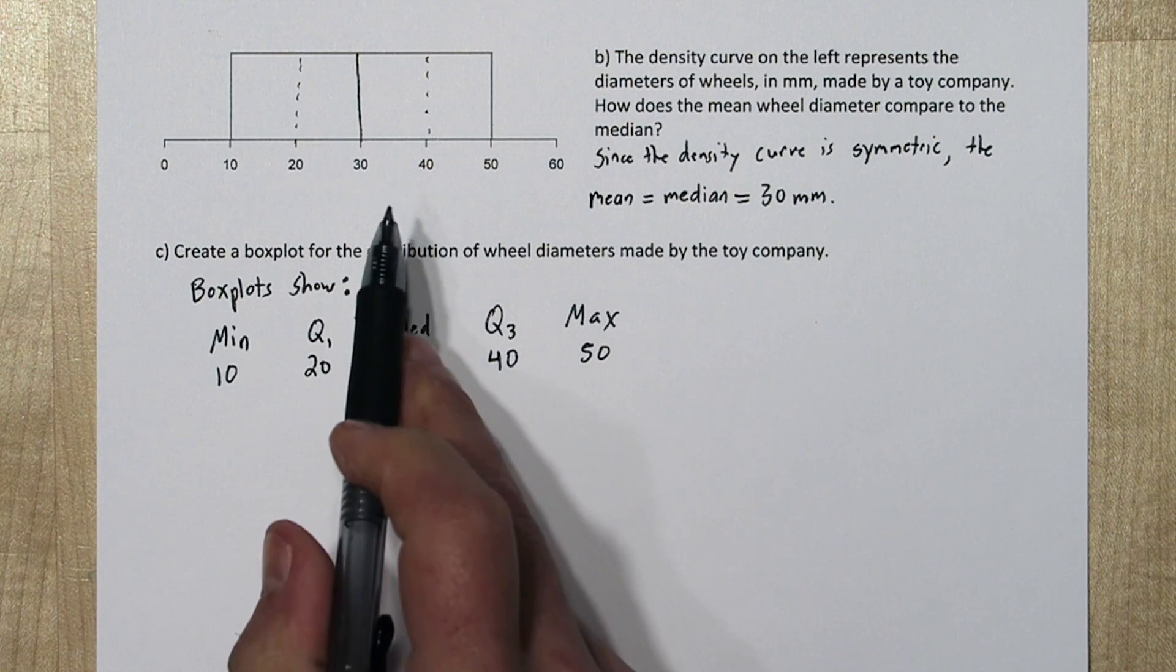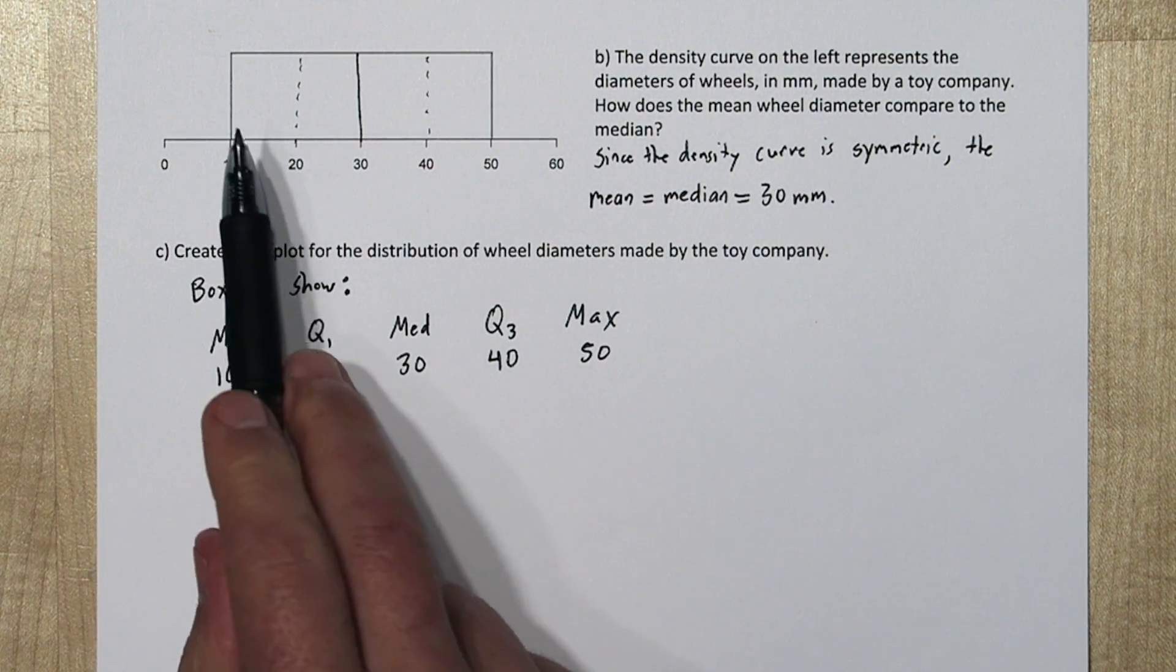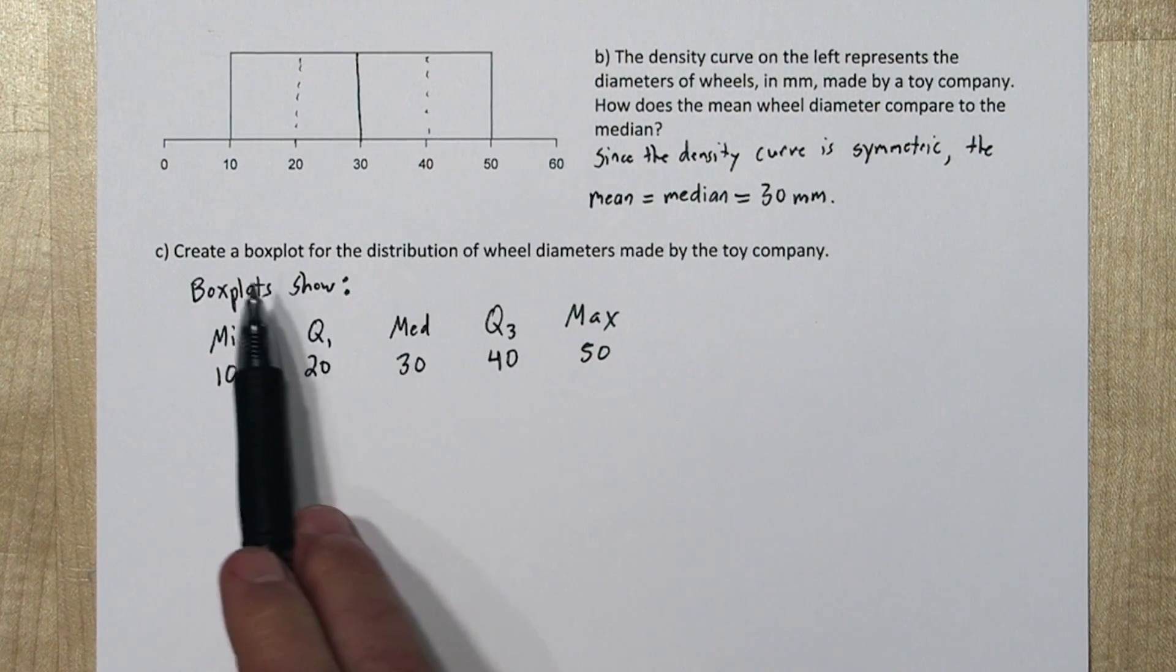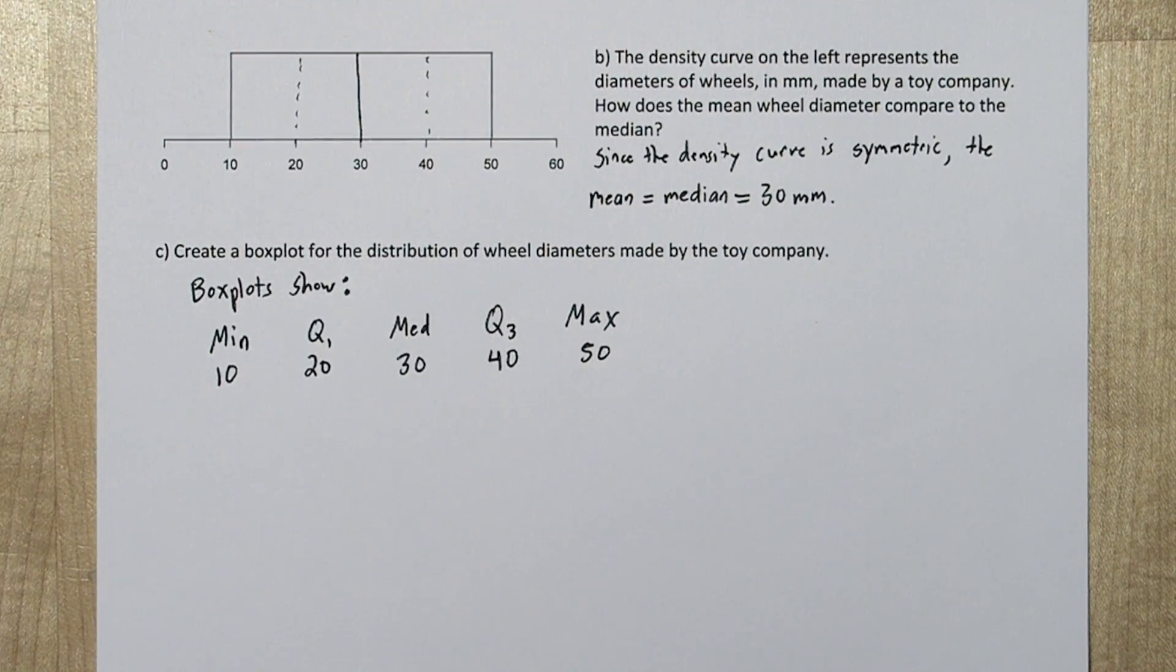Now this only works because it's a uniform distribution. And all the area is equally divided through this range of 40.